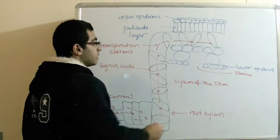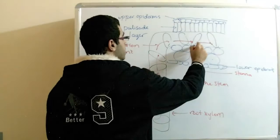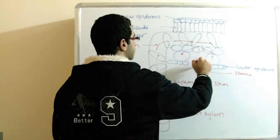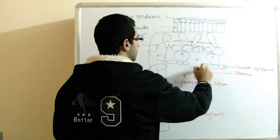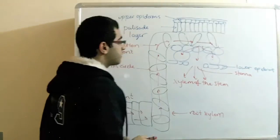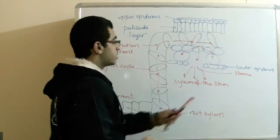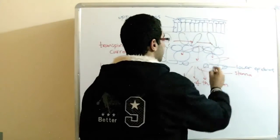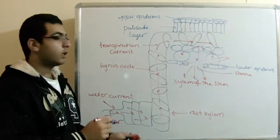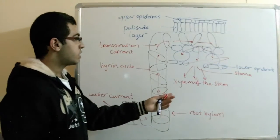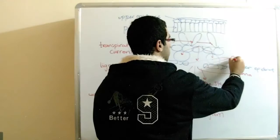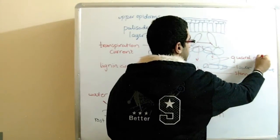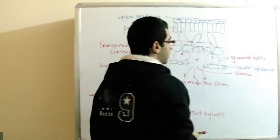So the water just moves like this and goes out from the leaf surface through the stoma. Here we have two cells that control the opening and closing of the stoma, which are called the guard cells, as they guard the stoma.